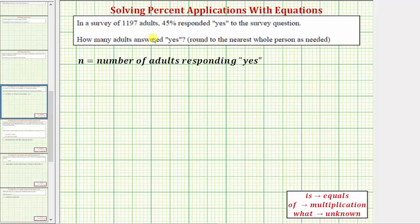In a survey of 1,197 adults, 45% responded yes to the survey question. We're asked how many adults answered yes, and we're told to round to the nearest whole person as needed.